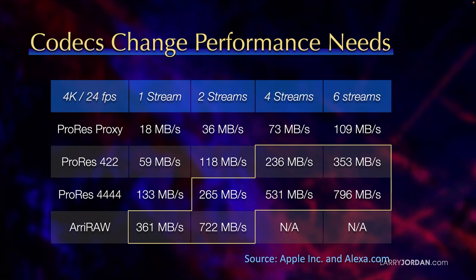You would never use Arri RAW for multicam, so that's why it says not available. The yellow box indicates a data transfer rate that is faster than a single hard drive — or, for that matter, faster than a single 1 Gig server — can support. We'll talk more about that in a minute.